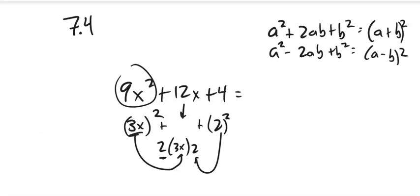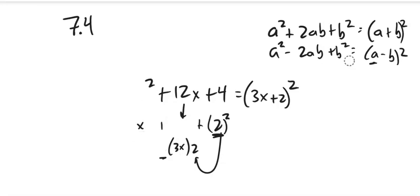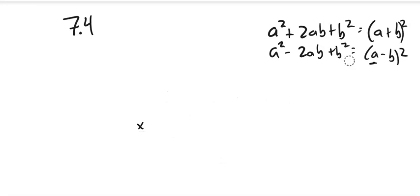So I can tell that this factors to - that's like my a, and that's like my b. So this would factor to (3x+2)². Again, being able to recognize these is huge. Seeing that there's a square at the front and square at the bottom is a good way to recognize them.